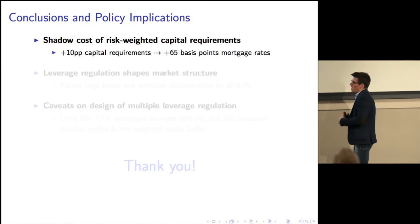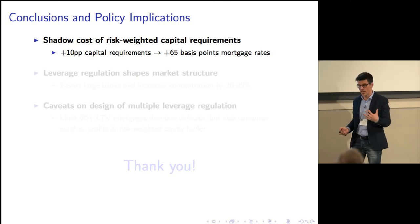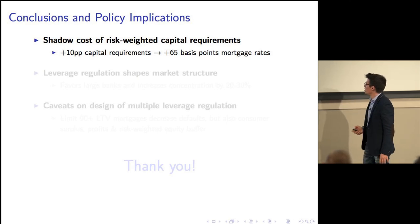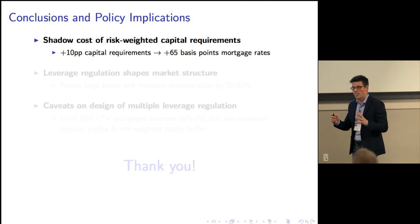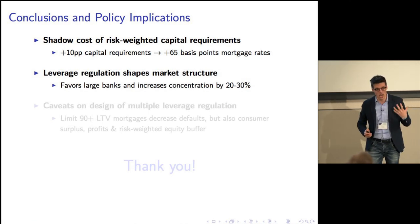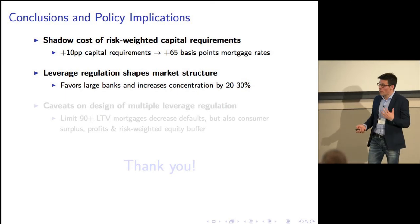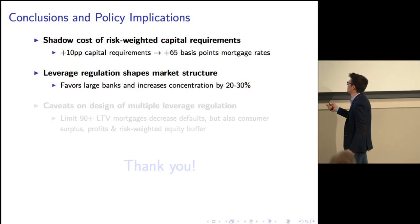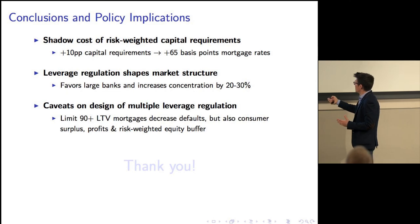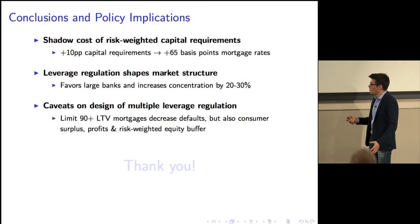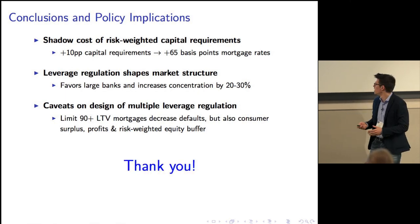To conclude: I provide a new estimate of the shadow cost of capital requirements, finding that a 10 percentage point increase in common capital requirements increases mortgage rates by about 65 basis points — an upper bound estimate. I then dig into the heterogeneity in this type of regulation, showing first that heterogeneity can really shape competition, and that in the UK the regulation seems to favor the largest banks and increase concentration by a significant amount — 20 to 30 percent. Finally, I put a caveat on proposals for household leverage limits: they can decrease default, but they have strong impacts on consumer surplus and profit, and therefore on welfare, and also have unintended consequences on the equity buffer of the largest lenders. Thanks a lot.